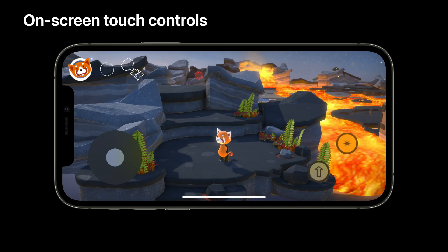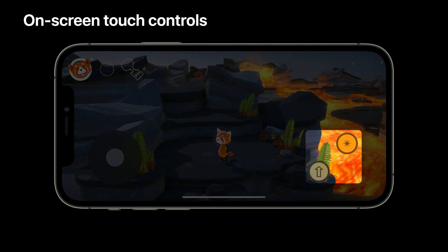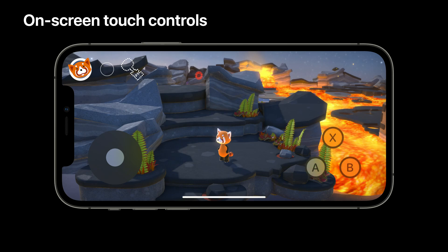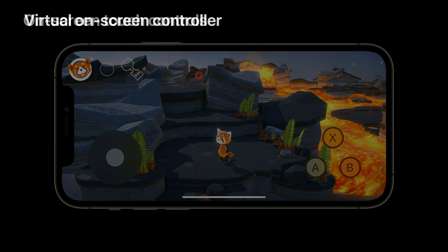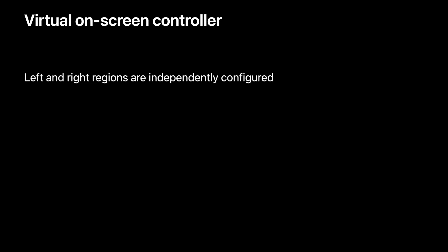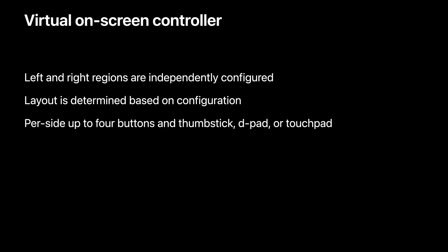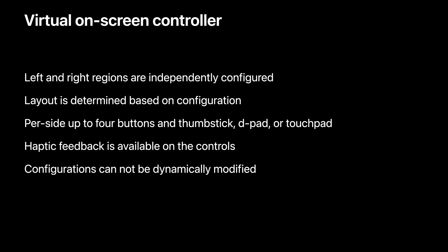Instead of writing your own on-screen overlay UI and translating touch inputs into your game input system, these on-screen controls appear to your code just like game controller framework GC controller objects, so your input logic can remain much more consistent. They're customizable with your own symbols and they integrate with your colors and style. They adjust to a variety of layouts depending on whether you want just one button, three buttons, or a D-pad and multiple buttons. Per side, a configuration can be built with zero to four buttons and one of either a thumbstick, a D-pad, or a touchpad. There are haptics on the buttons and the sticks, and configurations are fixed at the time of creation.